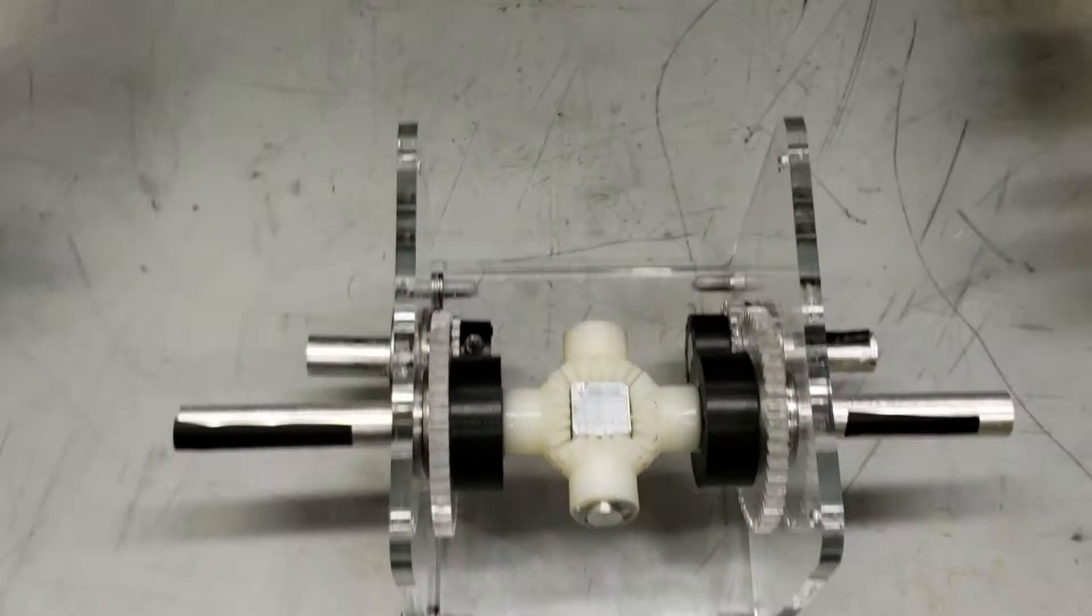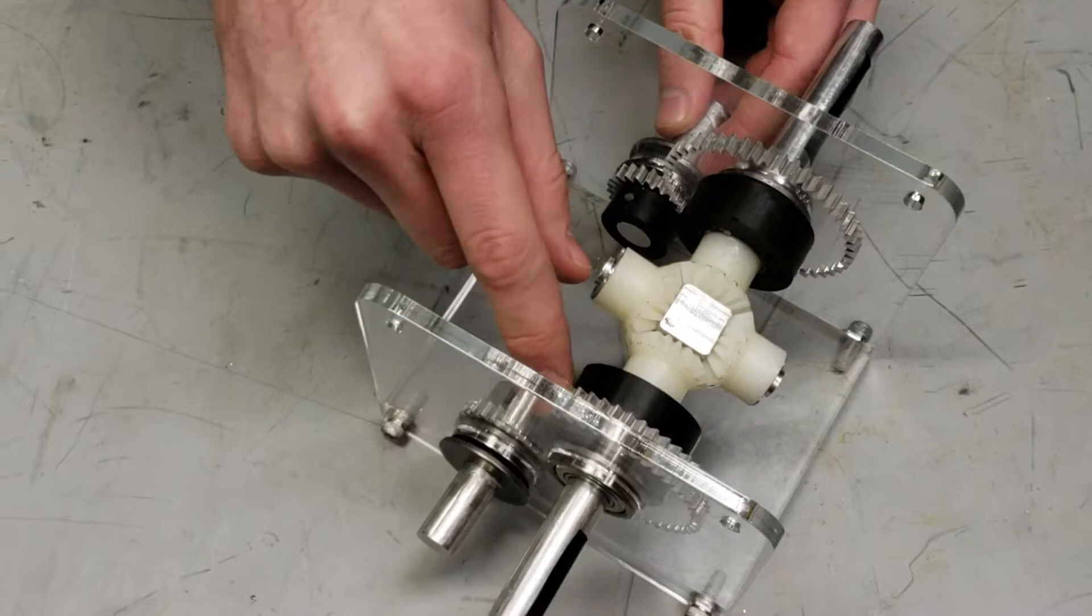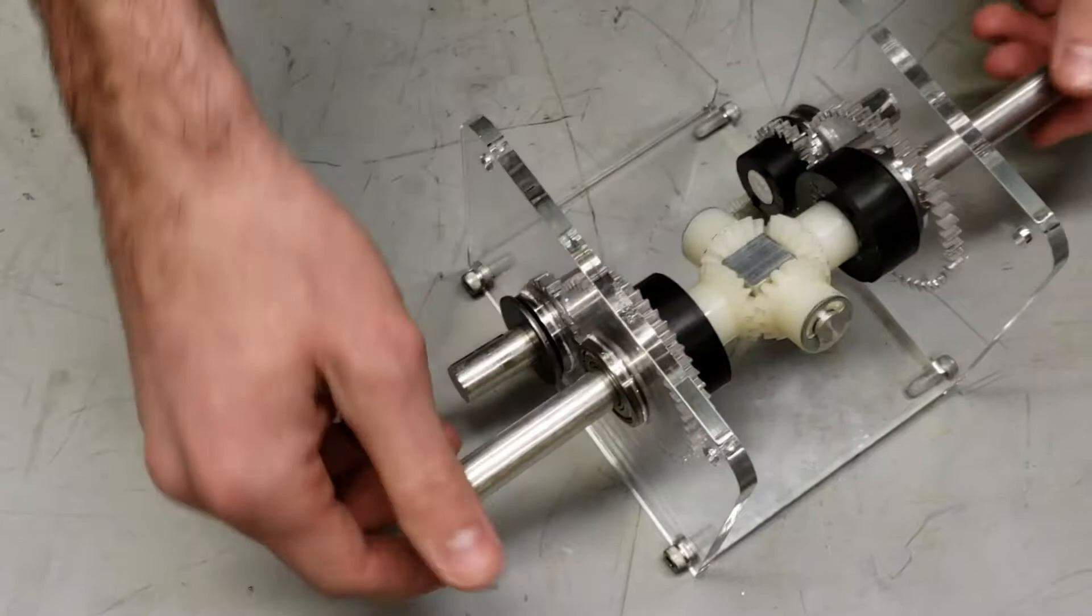So this is our gear set. We have our two input shafts right here. These input shafts have these 24 tooth spur gears on it, which these 24 tooth spur gears go onto these 48 tooth spur gears, which then attach to these 16 tooth bevel gears, which spin the whole output shaft.